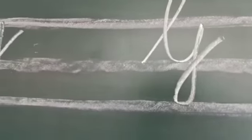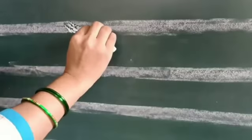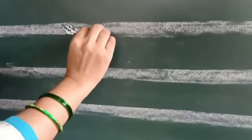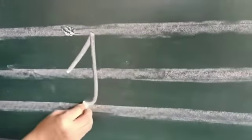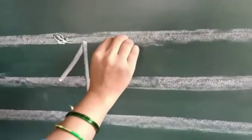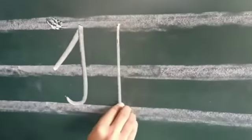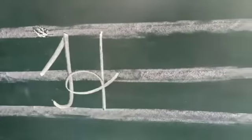Next, H for hat. This is our cursive letter H. Make a stroke from the second line to the top line, then make a curve, an upstanding line, and make another stroke, then make a curve again.